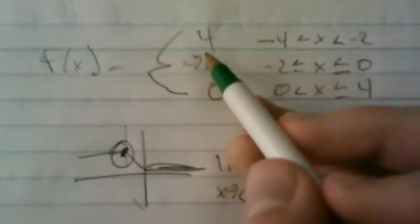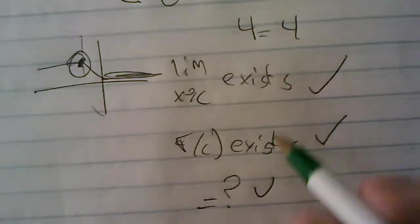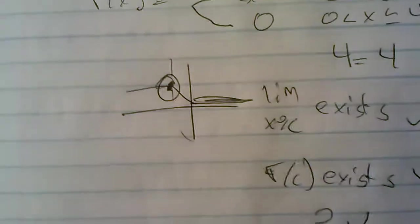So those things are equal because four equals four. You know, we just check from the left side, we check from the right side. Are those equal? Yes. So is that equal to f of c? Yes. So that's all that asks.